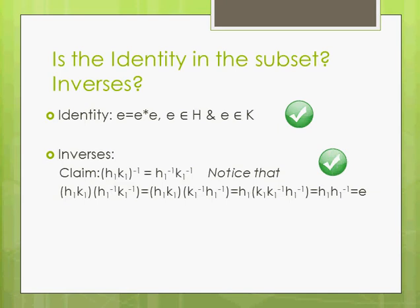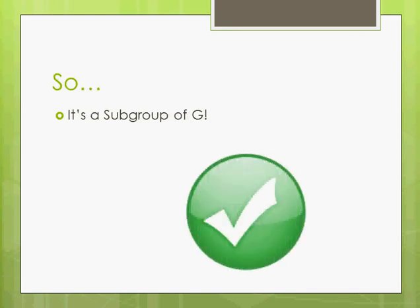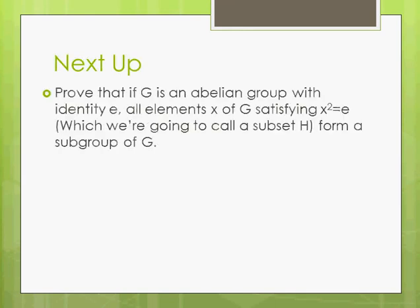So it's a subgroup of G. Now we have another interesting example with another abelian group. This time we have a subset H where the special quality is that whenever you square an element — in other words, multiply an element by itself — you get the identity: x² = E. We need to show that H forms a subgroup of G.